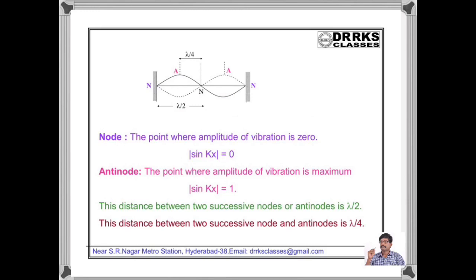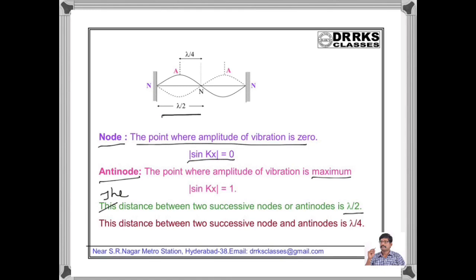You must define node and antinode. The point where the amplitude of vibration is 0 is called a node — that is where sin(kx) = 0. The point where the amplitude of vibration is maximum is called an antinode — that is where sin(kx) = 1. The distance between two successive nodes or antinodes is λ/2. These are very important points.